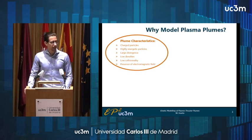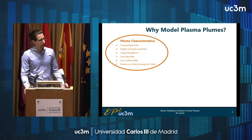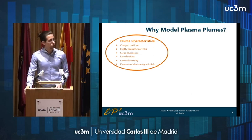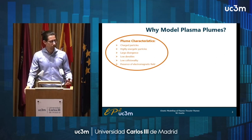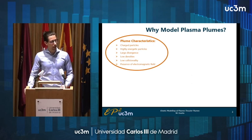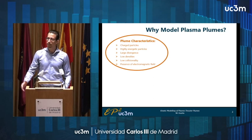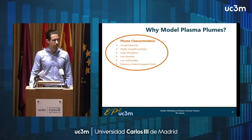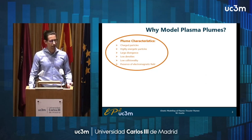The first question we have to ask is: why do you want to model plasma thruster plumes? Well, to answer this we have to first see what the characteristics of the plumes that we want to model are. We are talking about plasma, so we have charged particles, and due to the high specific impulse of our thrusters we have highly energetic particles. These thrusters also have a plume characterized by a large divergence, by low densities especially downstream, which lead to a low collisionality, and of course we have the presence of electric and magnetic fields.